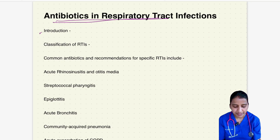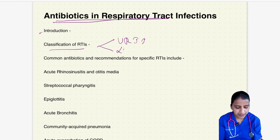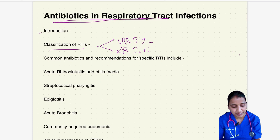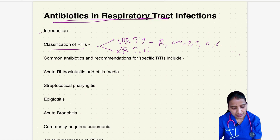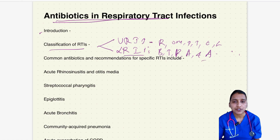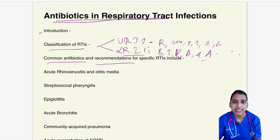Broadly, respiratory tract infections are classified into upper respiratory tract infection and lower respiratory tract infections. The conditions under upper respiratory tract infection are rhinosinusitis, otitis media, pharyngitis, tonsillitis, epiglottitis, and laryngitis. The conditions under lower respiratory tract infection are bronchitis, tracheitis, pneumonia, and acute exacerbation of COPD. Based on these conditions, let's see the common antibiotics and recommendations for these infections.